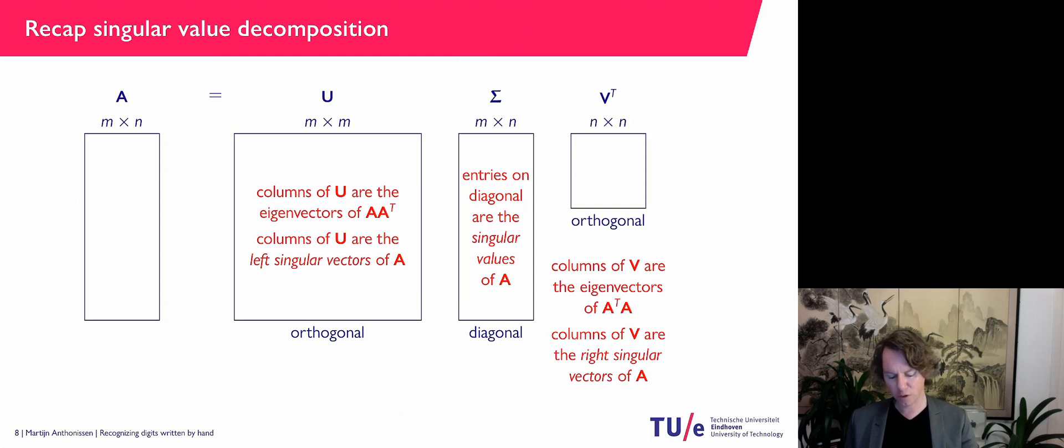And then finally, V transpose, if you look at V, V has the eigenvectors of A transpose A. Also, we have made them into an orthonormal system.